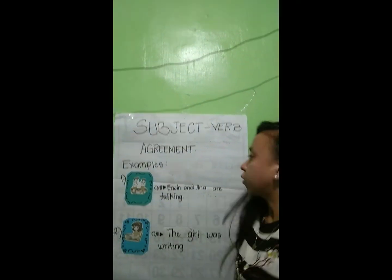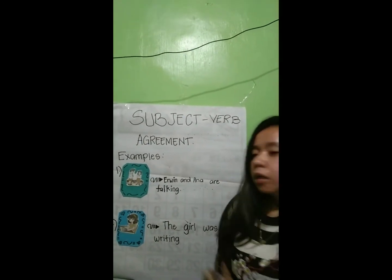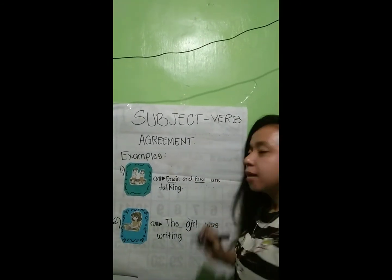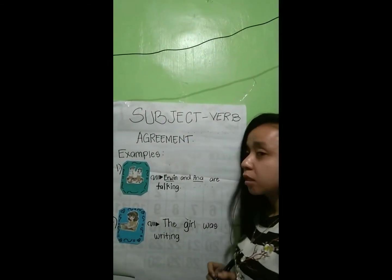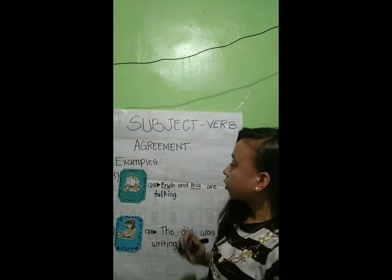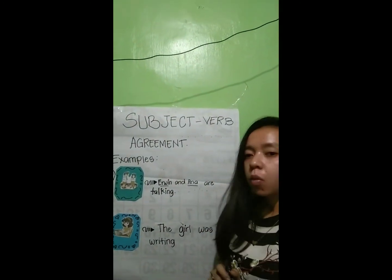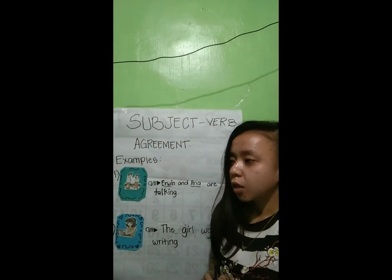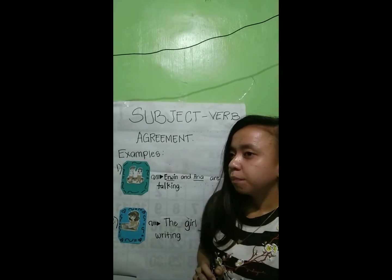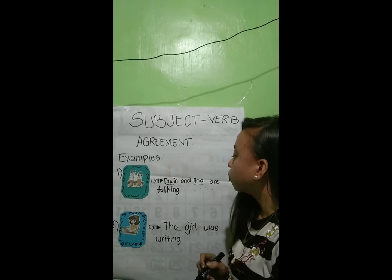So here is my example. First: Irwin and Anna are talking. Here, Irwin and Anna is the subject, which is plural, and the verb is 'are talking.' So in example number one, Irwin and Anna is the subject which is plural and the verb must be plural too.